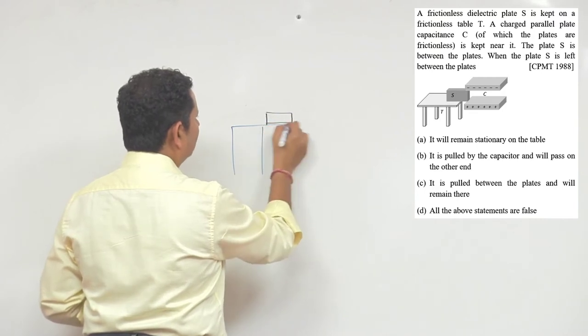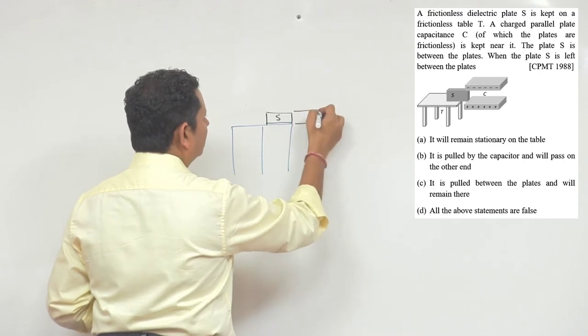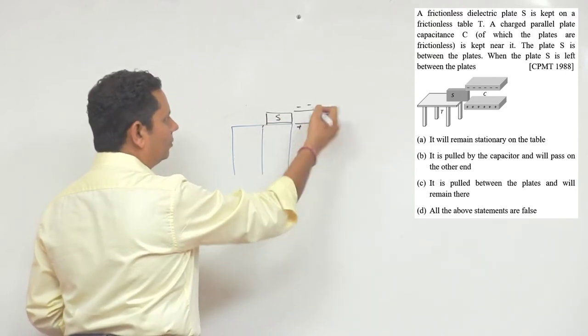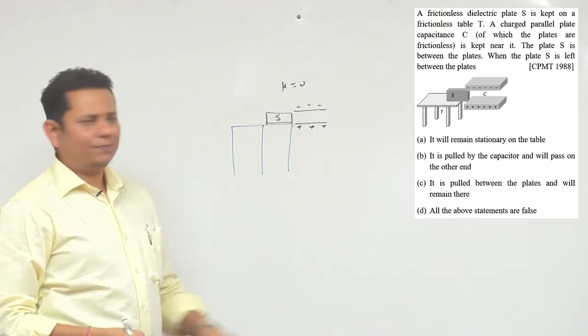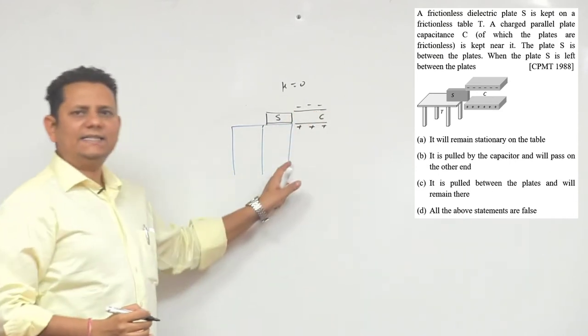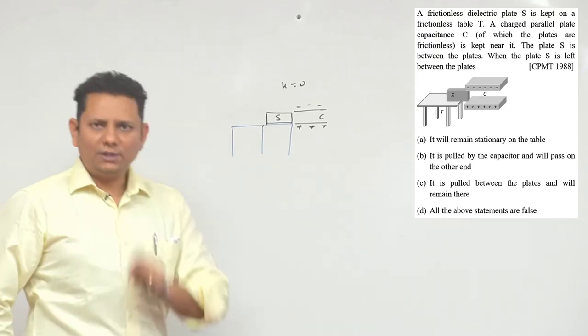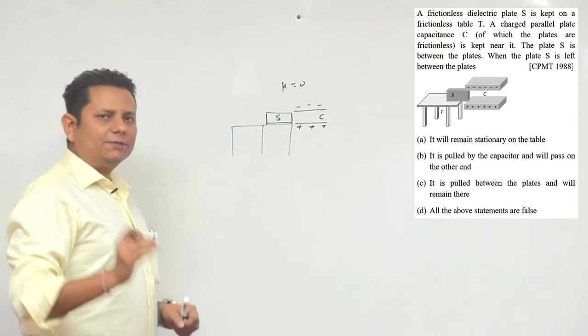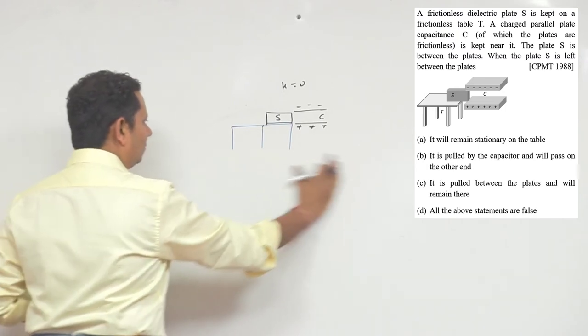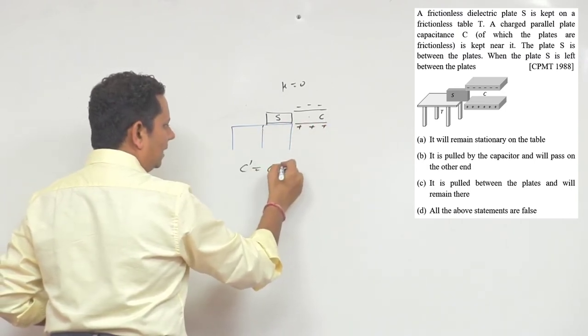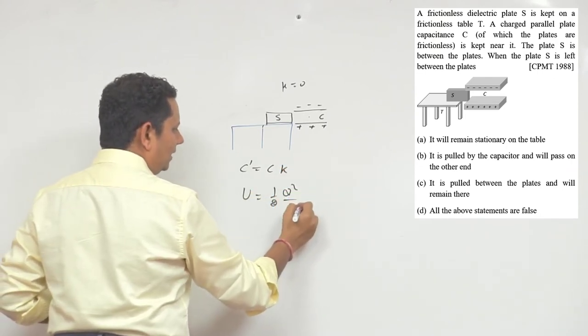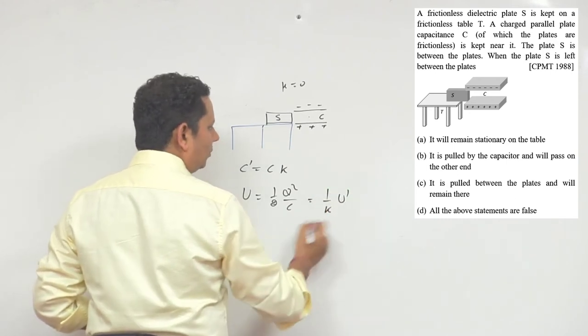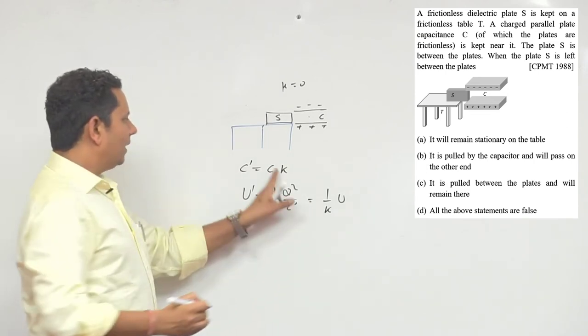The potential energy U' equals 1 by k times... because C changes to C', the potential energy has become less.